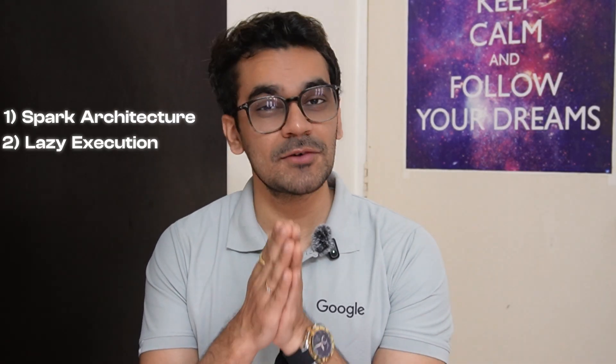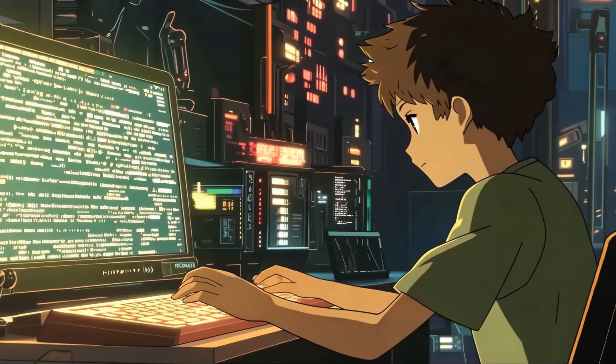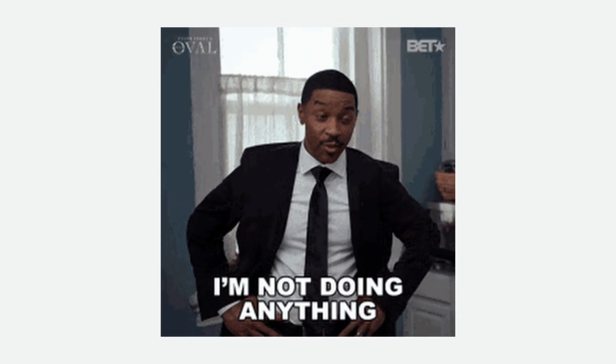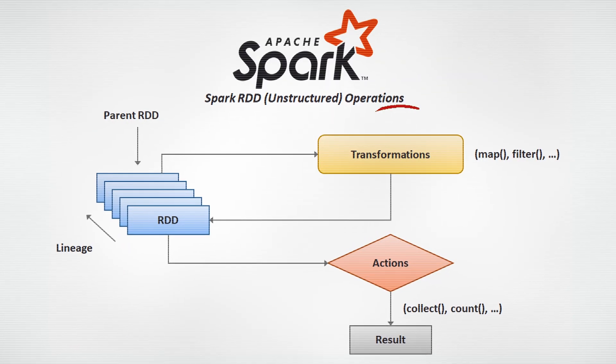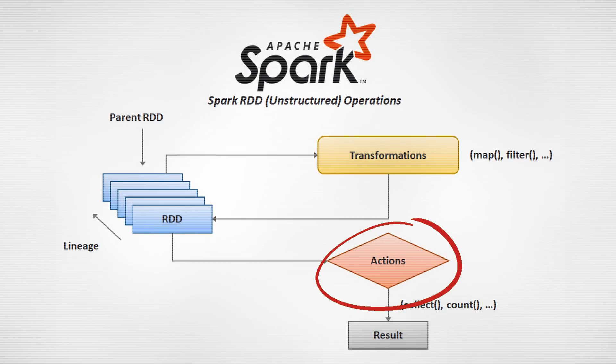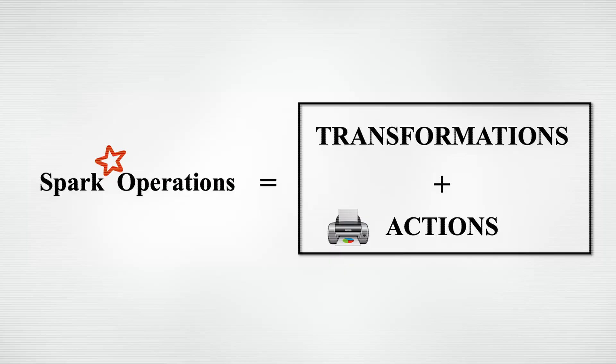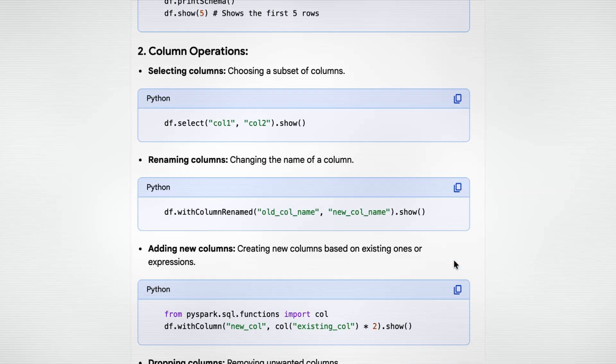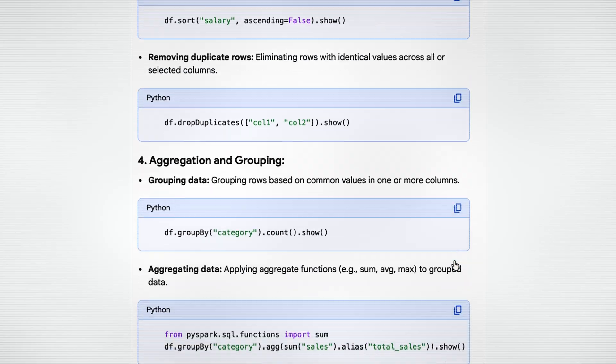Next is lazy execution — one of the most important concepts in Spark. You can write 100 lines of code and Spark will do nothing until you tell the Spark engine to give you or write the final answer. To understand this, you need to know transformations and actions. Transformations like SELECT, filter, and GROUP BY are lazy — they just build a plan. Actions like show, count, and write are eager operations that tell Spark to execute that plan now. Then there's the DataFrame API — five to six key operations used most in Spark — and Spark SQL, a higher-level abstraction that makes coding easier if you know SQL.